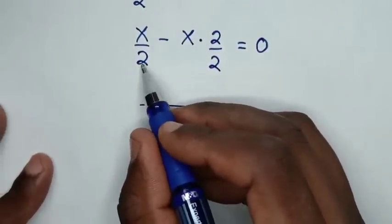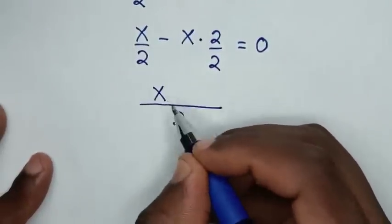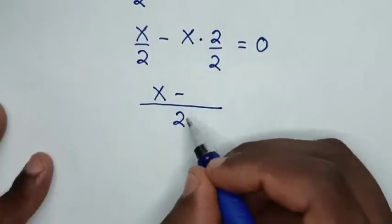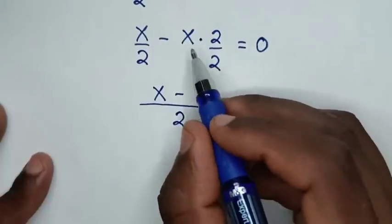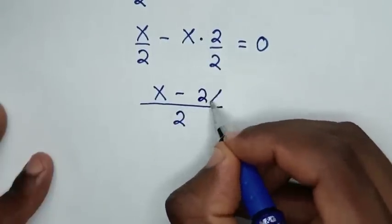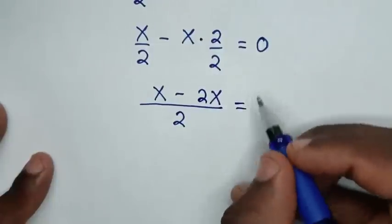2 divided by 2 is 1, and 1 times x is x. Then minus: 2 divided by 2 is 1, and 1 times x times 2 is 2x, equals 0.